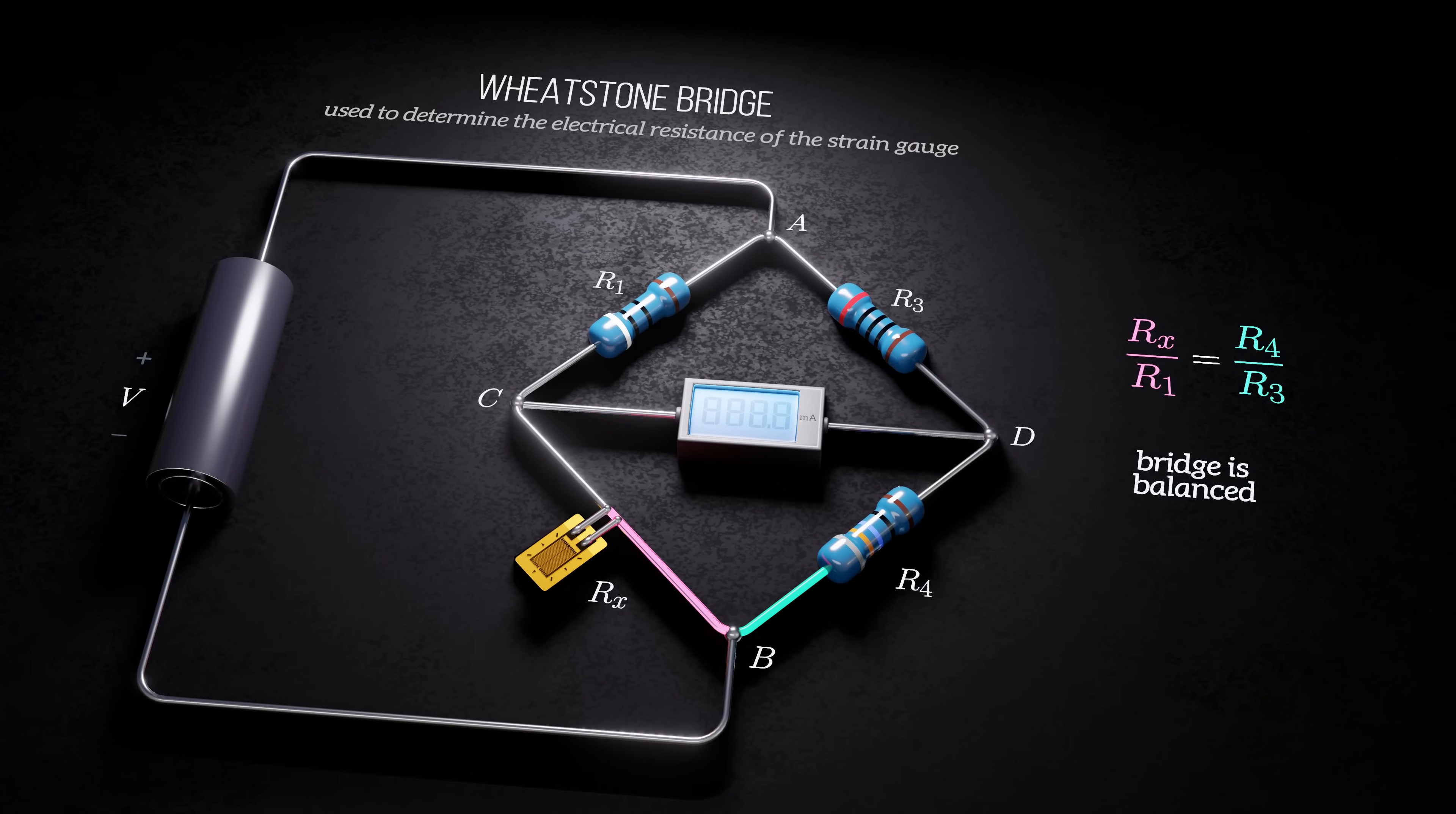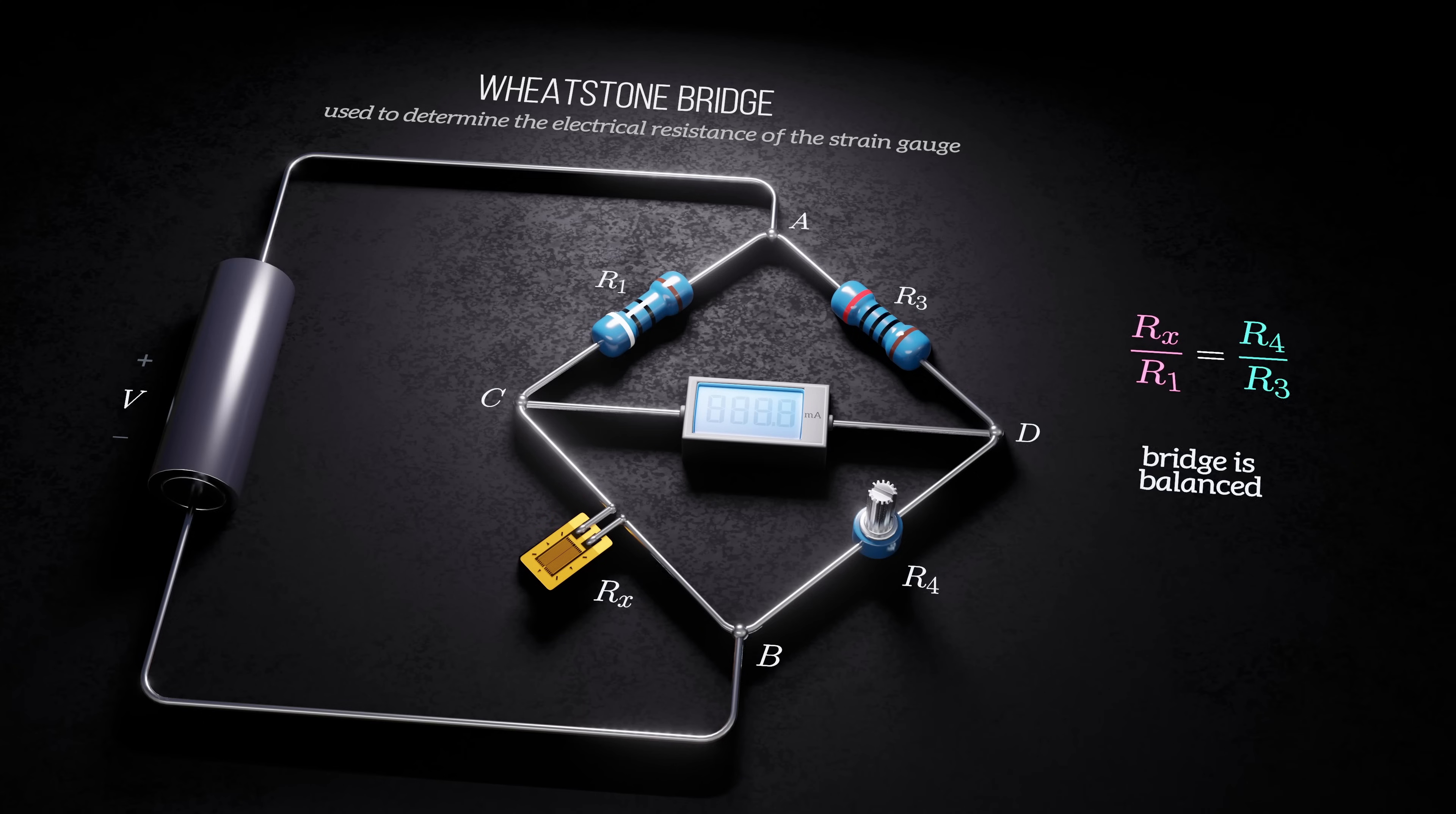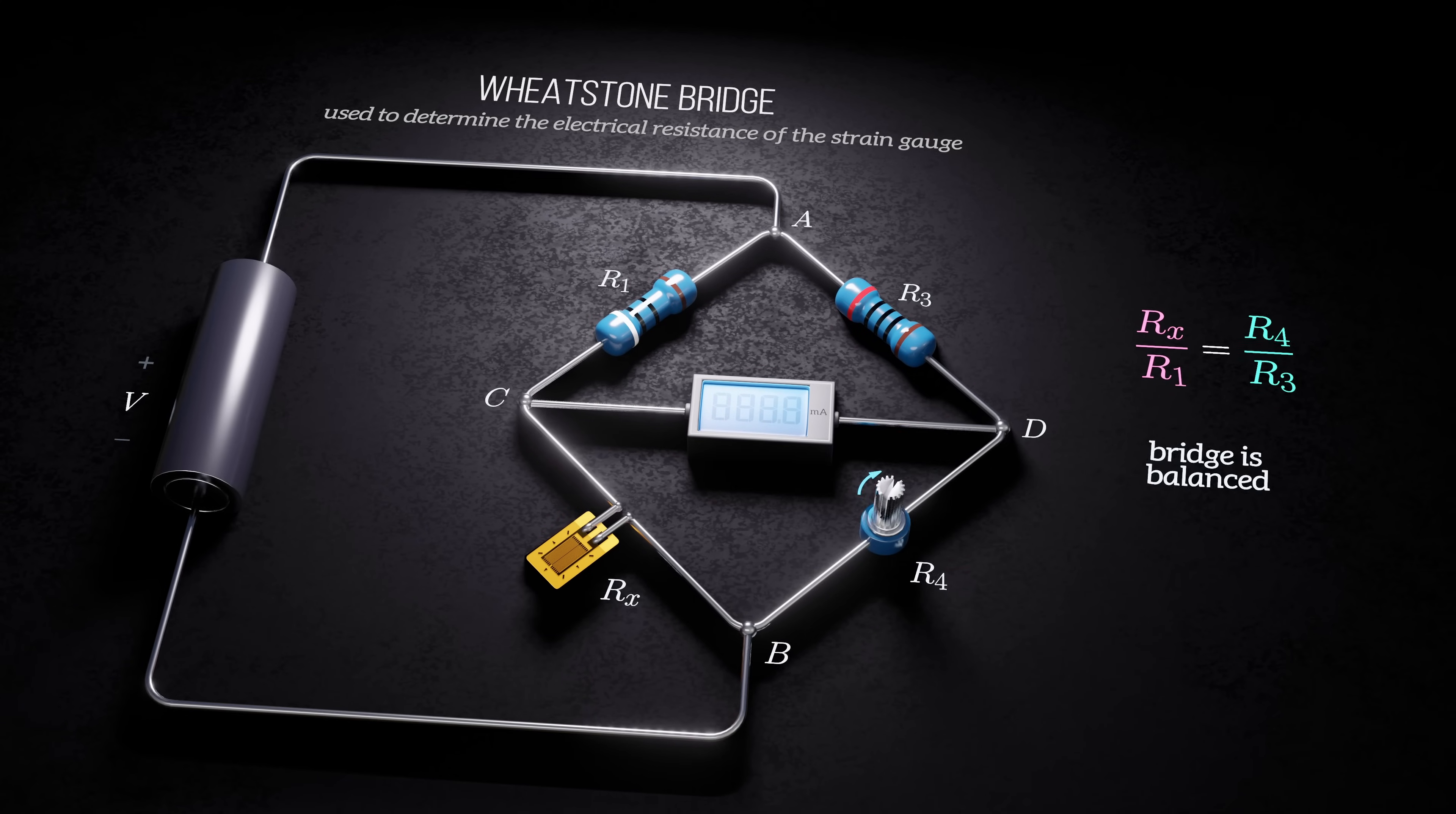If resistor R4 is replaced by an adjustable resistor, its resistance can be adjusted so that no current flows through segment CD, and the bridge is balanced.